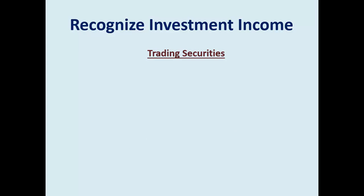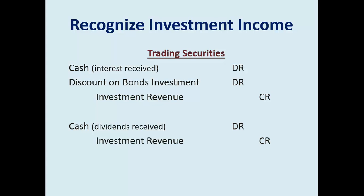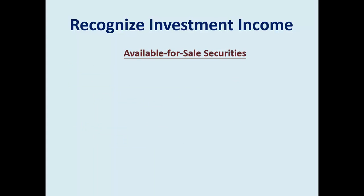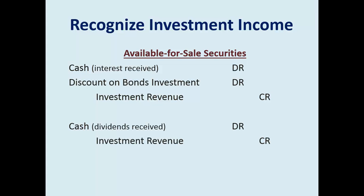The second time a journal entry may be required is when you receive income. If you invest in bonds, you get interest — called investment revenue. If you invest in stock, hopefully you'll get dividends if they're declared, also called investment revenue. Recognizing income with available for sale is identical. Note that with both trading and available for sale, you're amortizing the discount through that revenue.